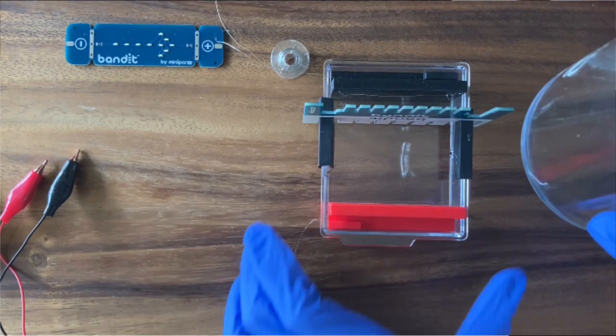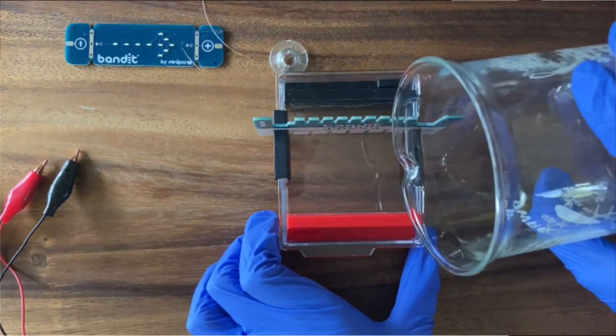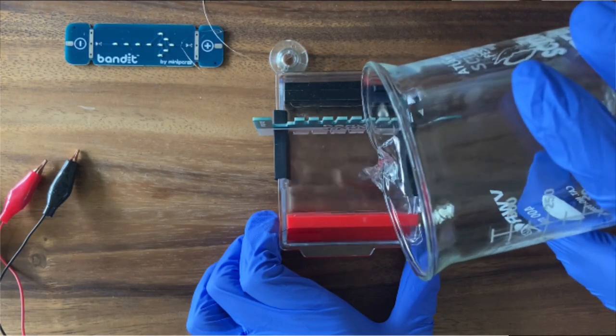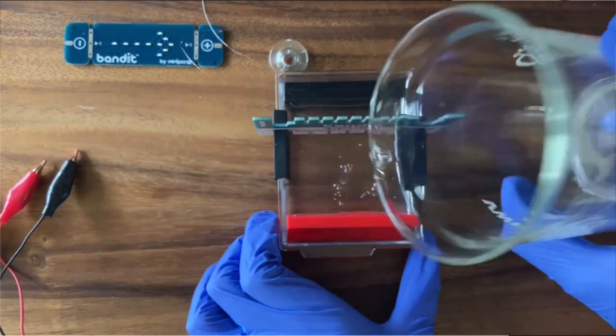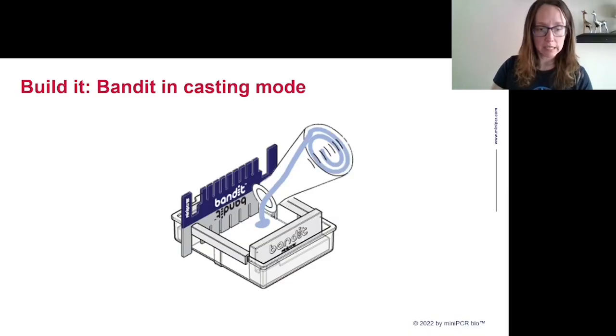The only thing left to do now is pour in the melted agarose that we're going to use to make our gel. Here's my agarose. I'm pouring in 30 milliliters. It's the amount of agarose that a Bandit gel takes. And it'll take about 10 minutes for it to firm up and harden.